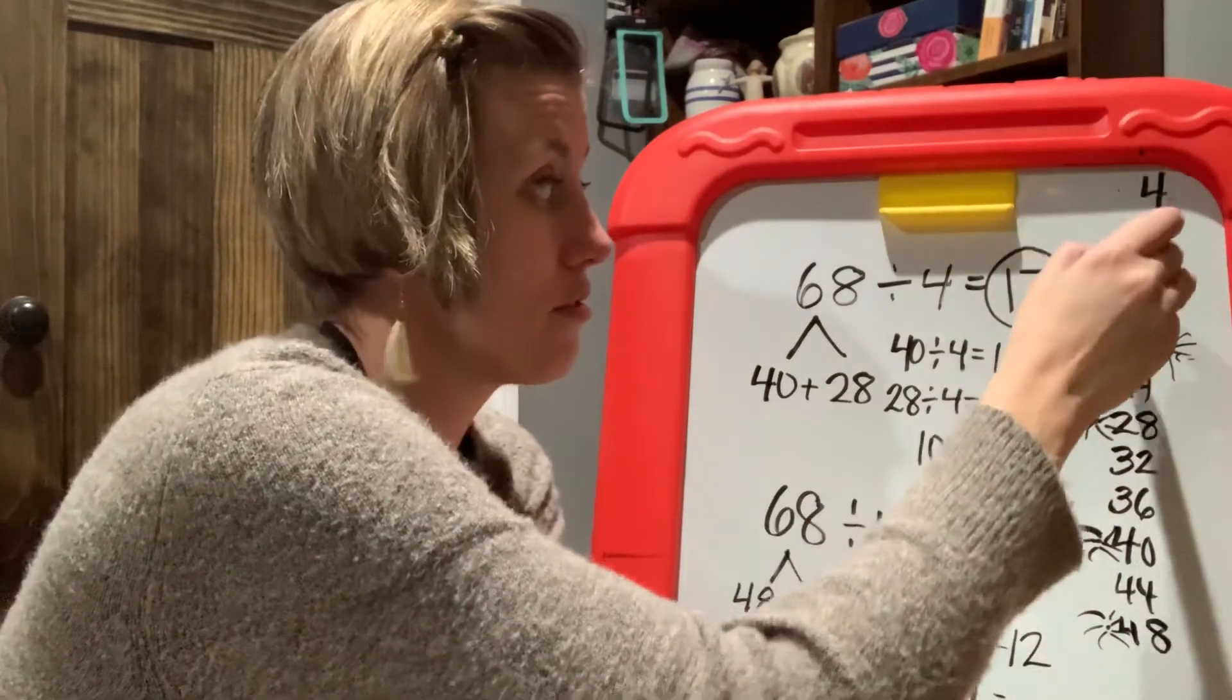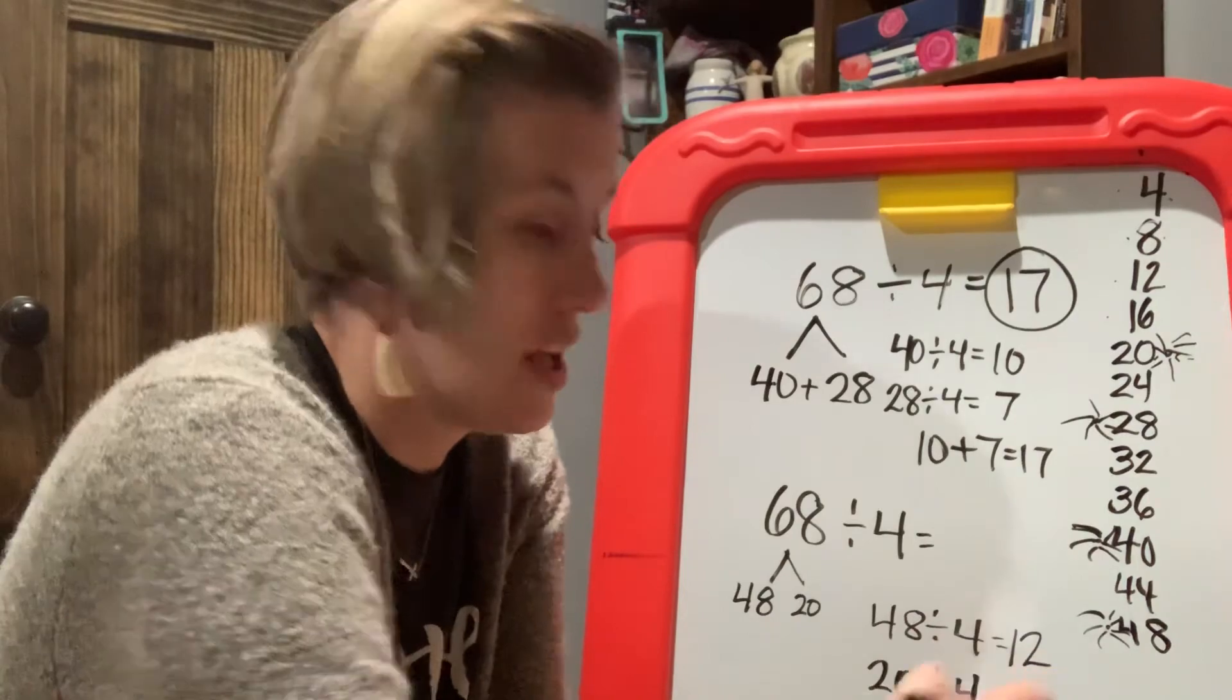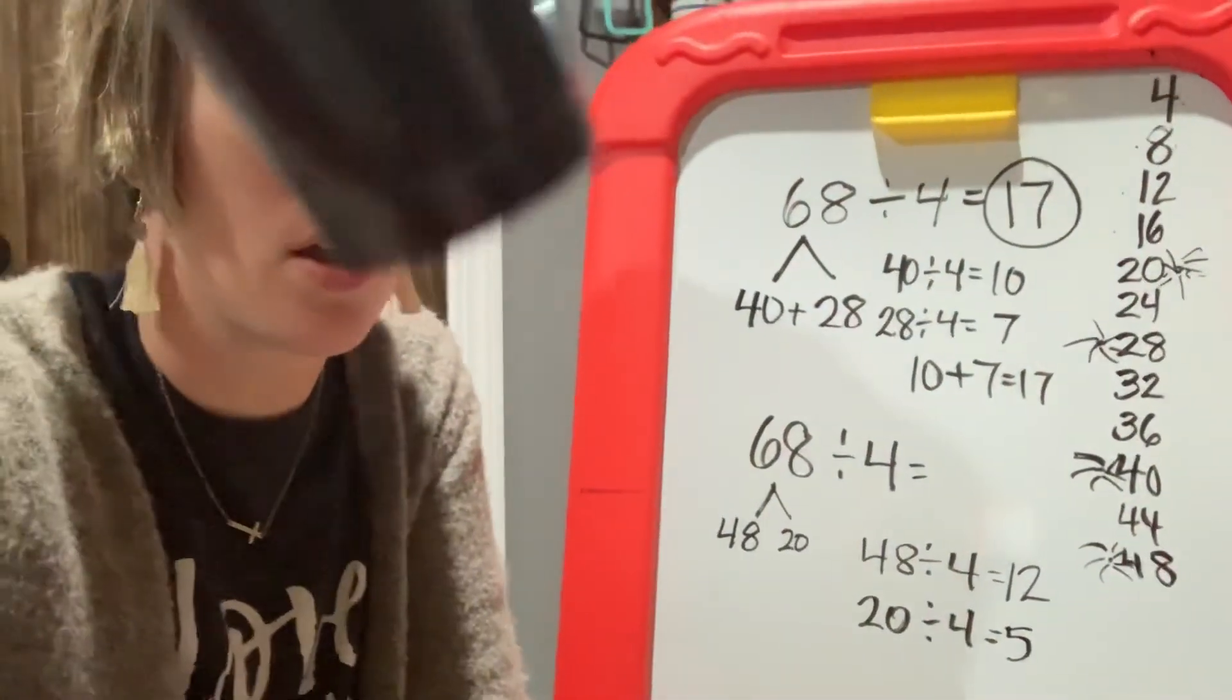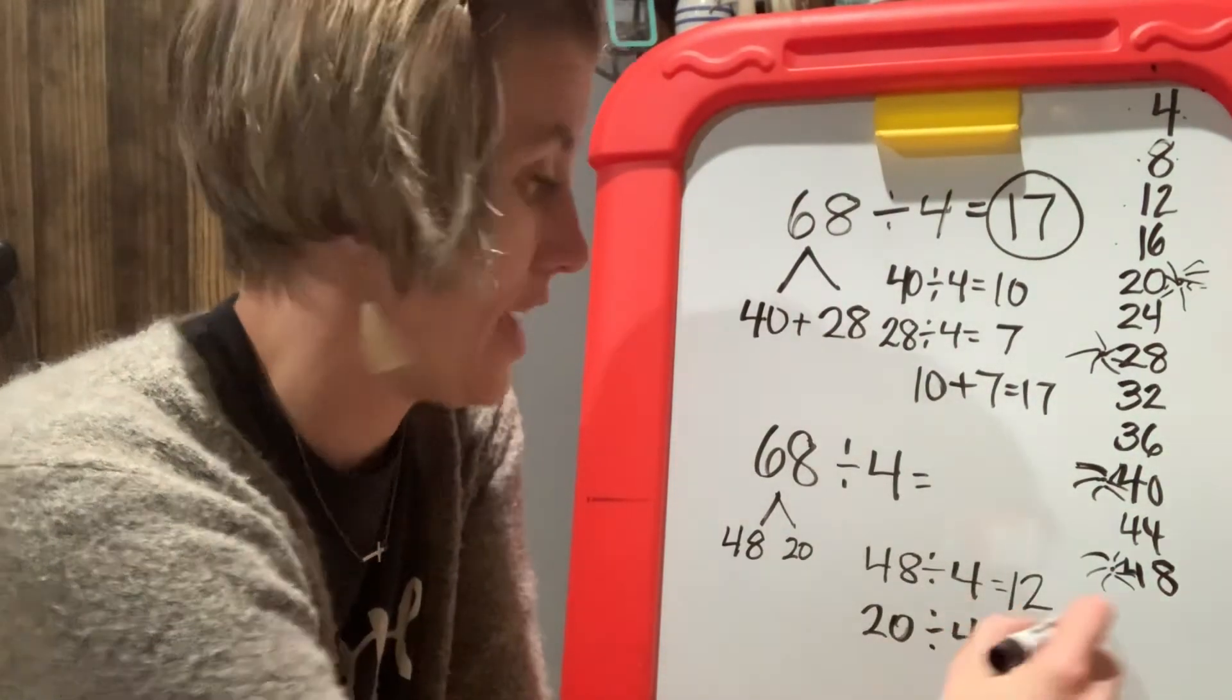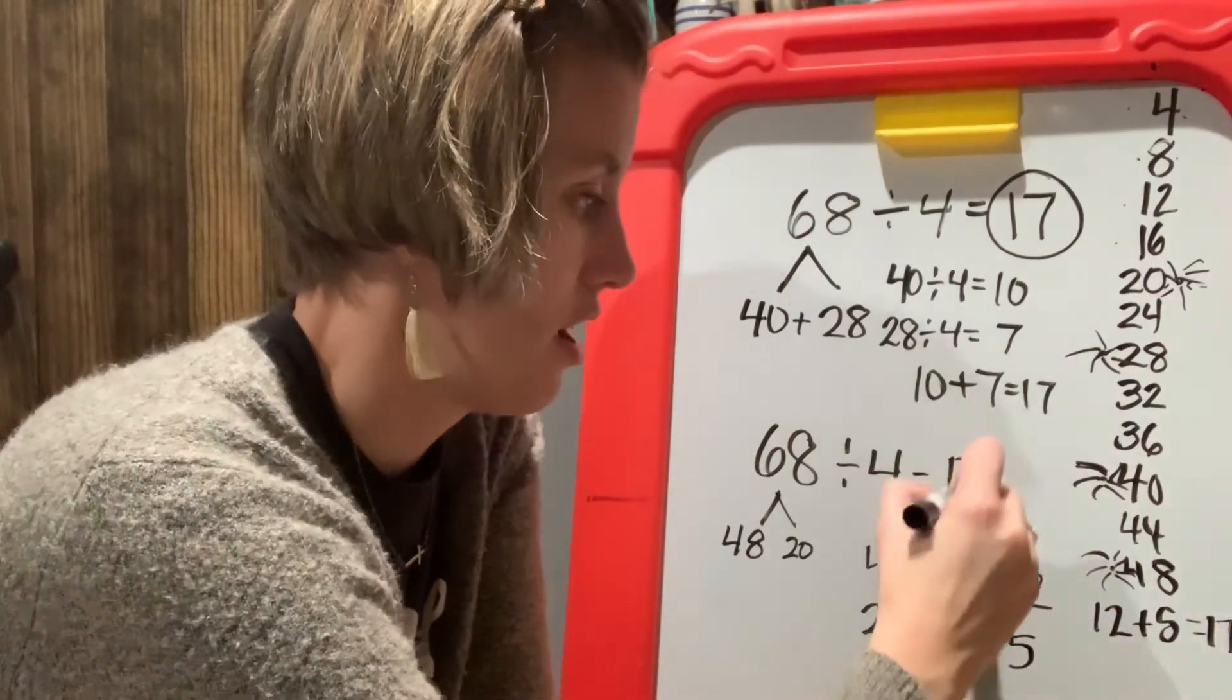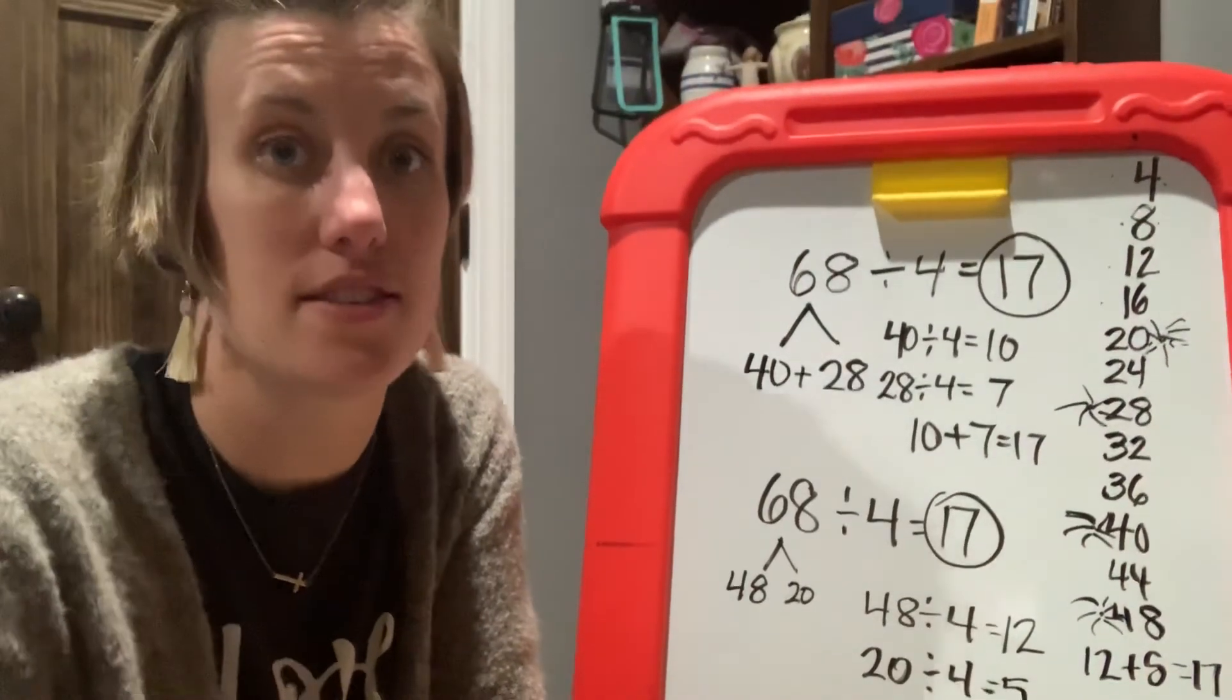Now, what are we going to do with these numbers? Getting hard to see there. And what are we going to do with these numbers? We're going to add them. We're going to add them. I'll do it over here. 12 plus 5 equals 17. My quotient remains the same. My quotient remains the same.